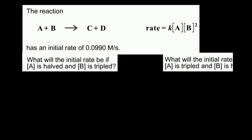The first question is: what will the initial rate be if A is halved and B is tripled? Let's look at the analytical way first. My rate — I'll designate that as r — is equal to k times the concentration of A times the concentration of B squared. I'll call this rate 1.